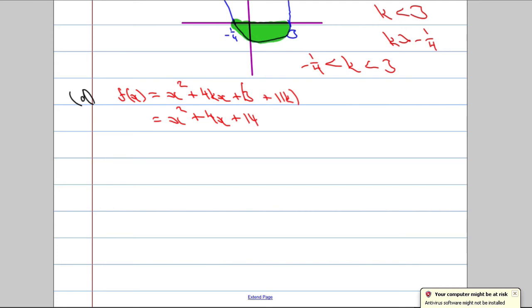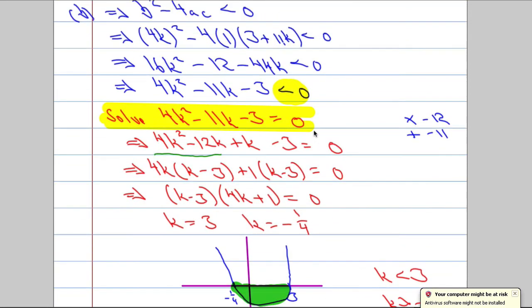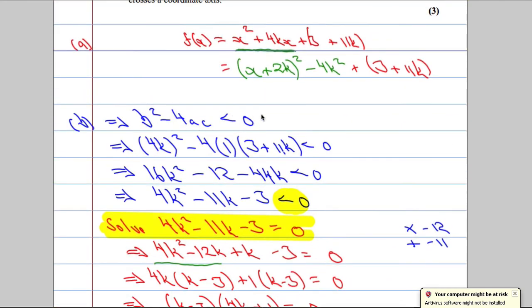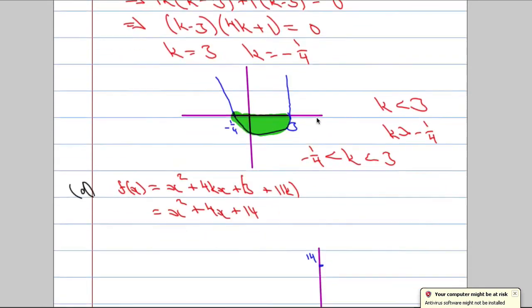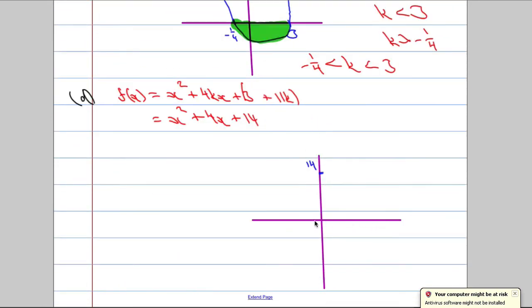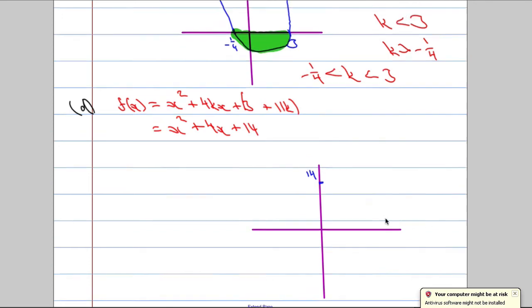Now, we're going to have to use a few pieces of information here to help us sketch this. We know that it's going to be a U-shaped graph because it's a positive x squared. I also know it's going to cut the y-axis at 14. So, it's either going to pass through there like so or it's going to pass up there like so. Another piece of information that we know is that b squared minus 4ac is less than 0. It told us earlier on that it's got no real roots. Now, if it's got no real roots, that means it doesn't cut the x-axis.